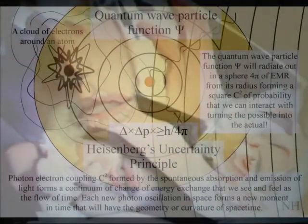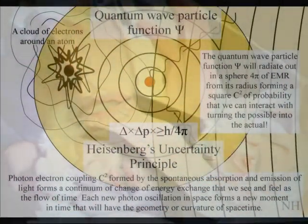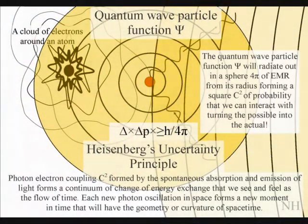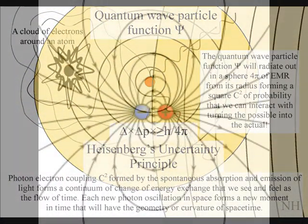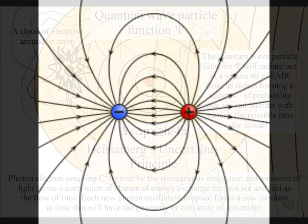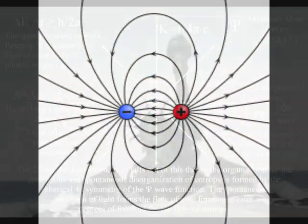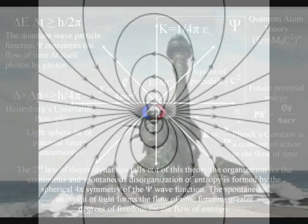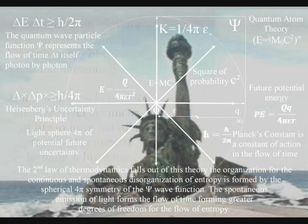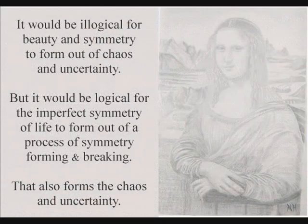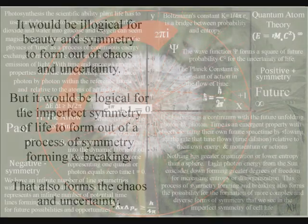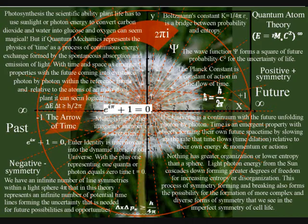In a thousand years from now, will we be able to comprehend this universal process as a process of symmetry forming and breaking that forms not just entropy and disorganization, but also the potential for ever greater symmetry formation that forms the diversity and complexity of life, forming the potential for art, poetry, music, morality, and love?